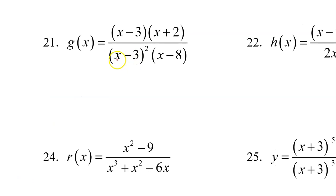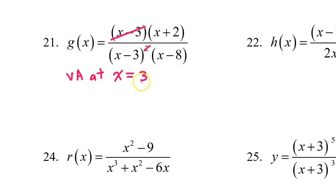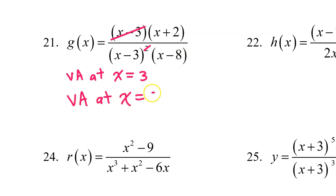In number 21, we see the factor of x minus 3 in the denominator — in fact, there are two of them. The factor of x minus 3 in the numerator will cancel out one of the factors of x minus 3 in the denominator, but because one factor still remains, this gives us a vertical asymptote at x equals 3. The x minus 8 in the denominator does not cancel out either, so that's another vertical asymptote at x equals 8.